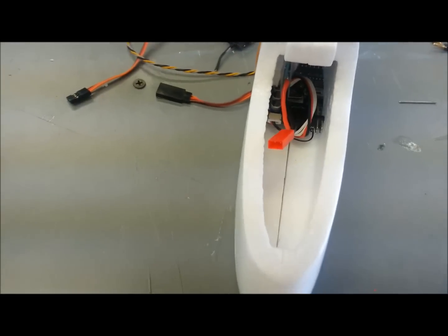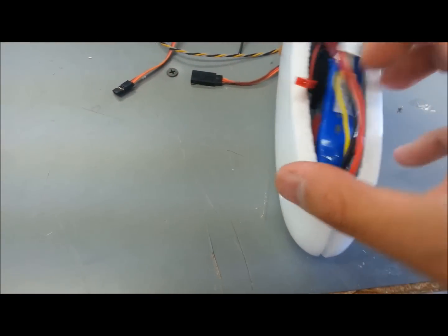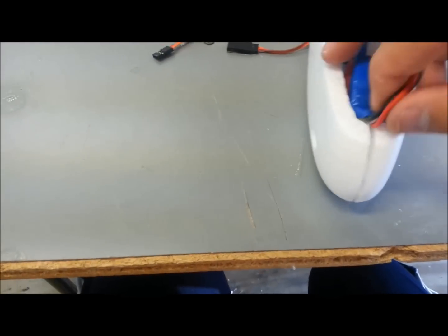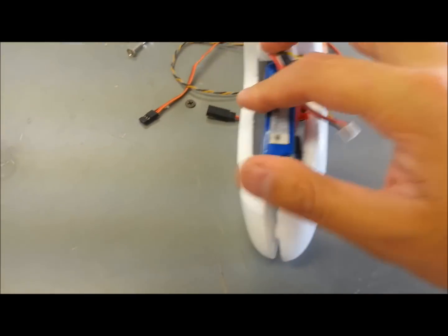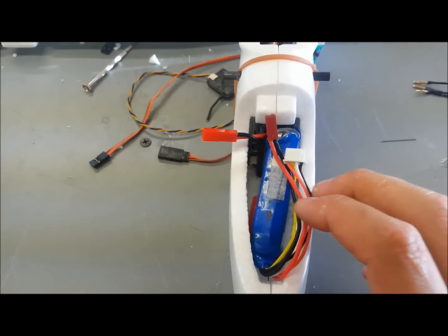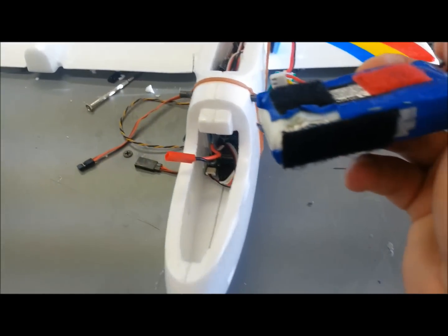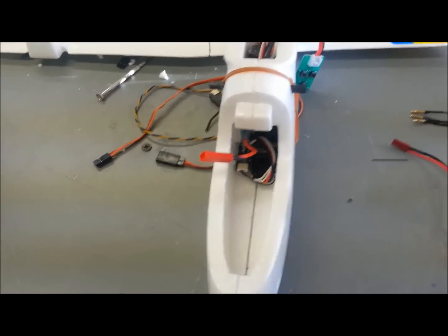This is a 1000 milliamp hour LiPo and it just fits in here kind of snug. Actually it fits in here pretty good. I'm trying to hold the camera and the plane at the same time. So, that's the 1000 milliamp hour LiPo in there. That's a bad LiPo. I don't fly with it. It took an impact. I just use it for testing purposes and things like that.